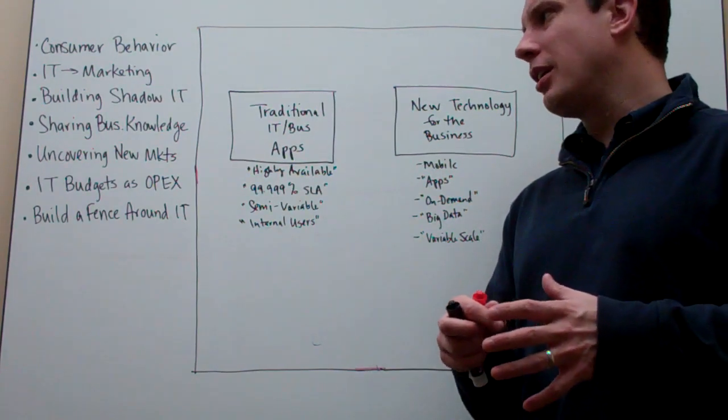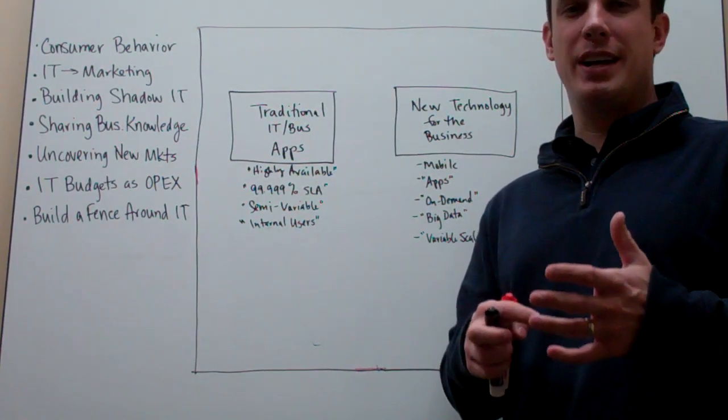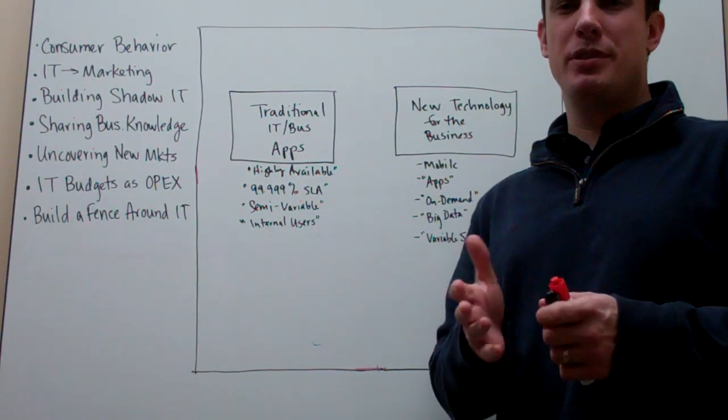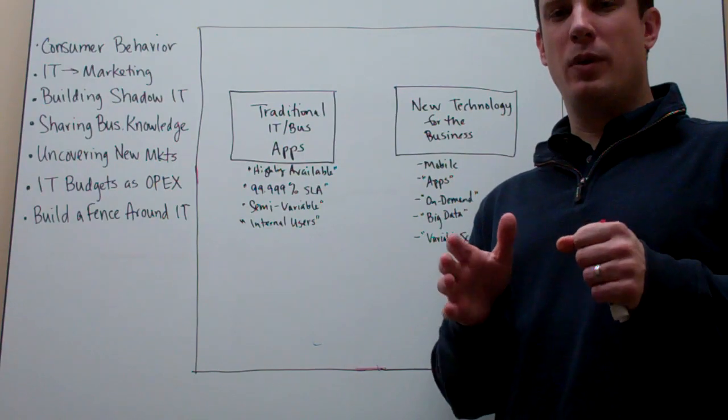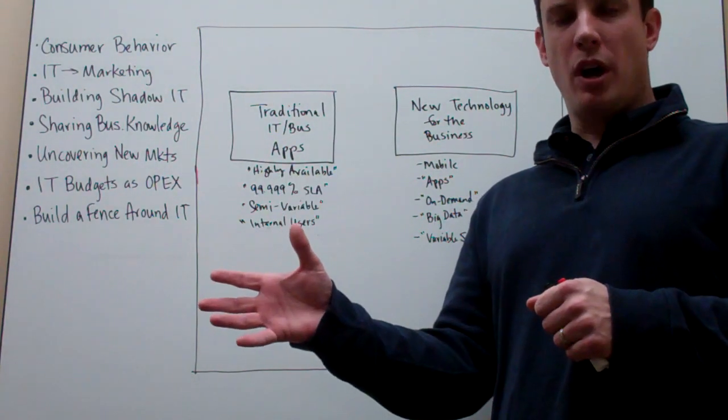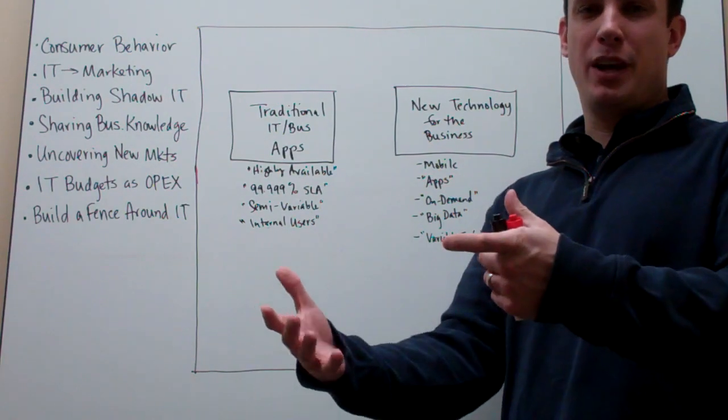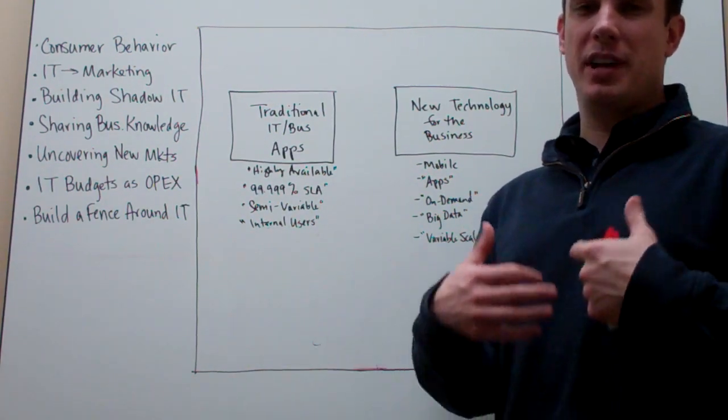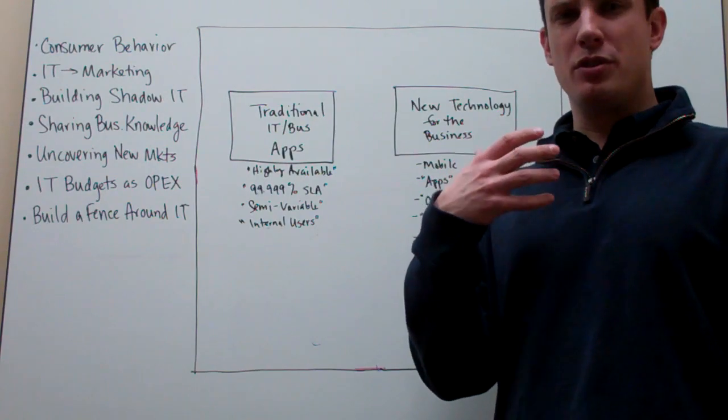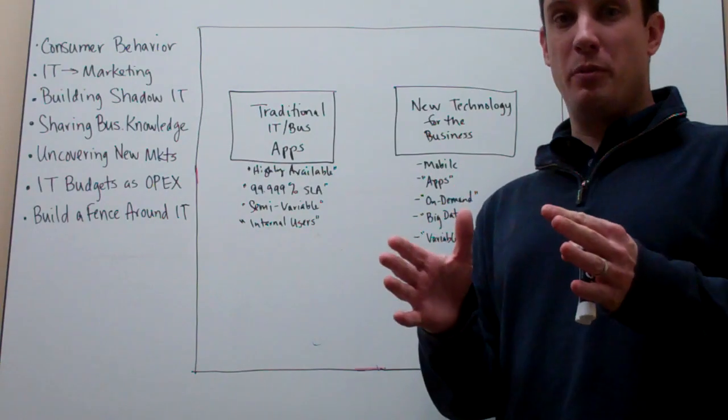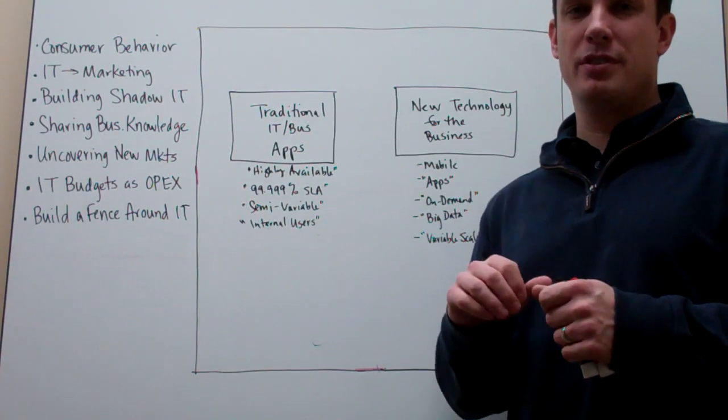We're going to focus on something that I'm going to call building a fence around IT. And by that what I mean is, as a business manager you're thinking about running an operation smoothly, being responsive to customers and the business, delivering results and metrics, and all those things to run the business, traditionally run the business and steady state run the business.